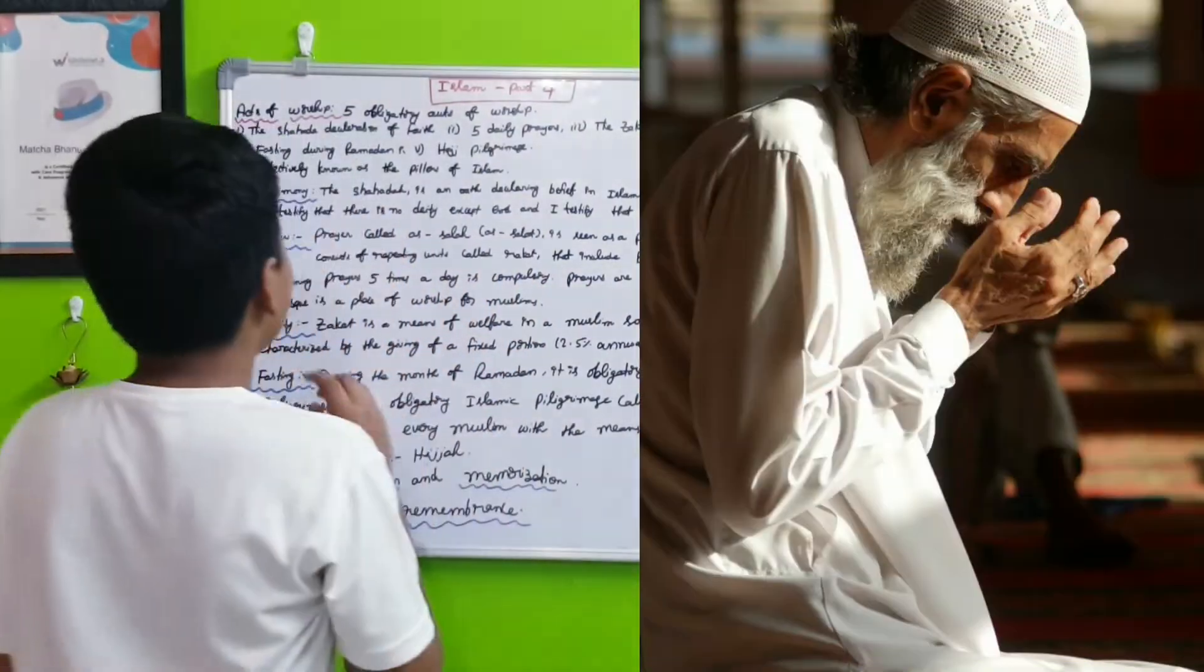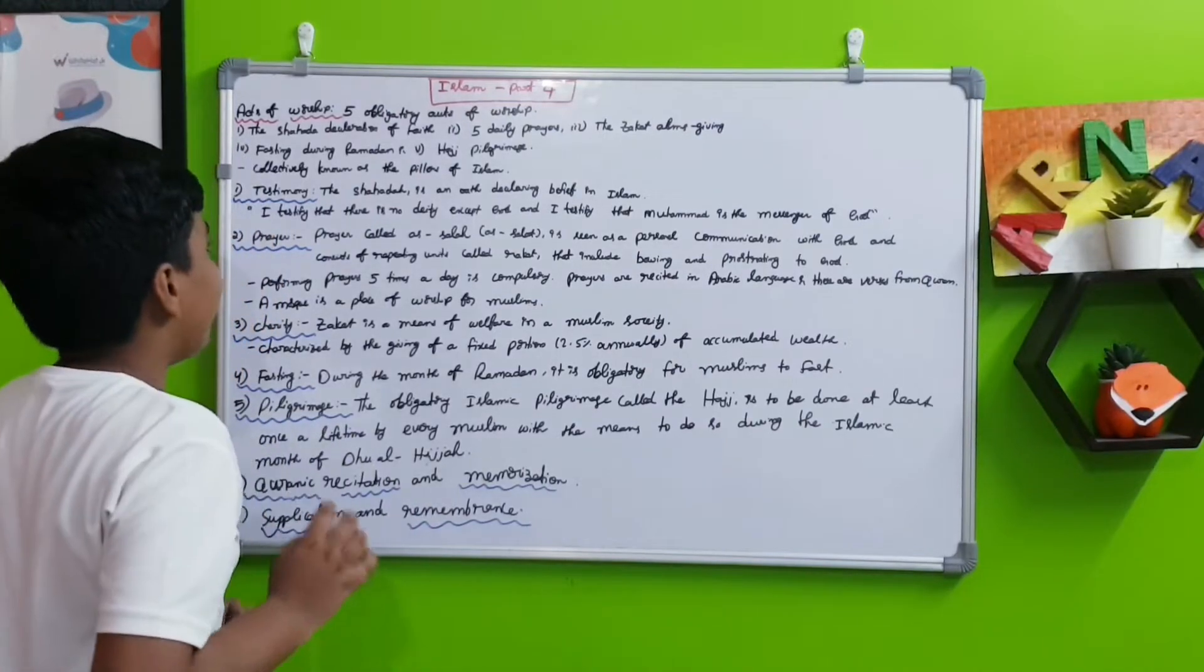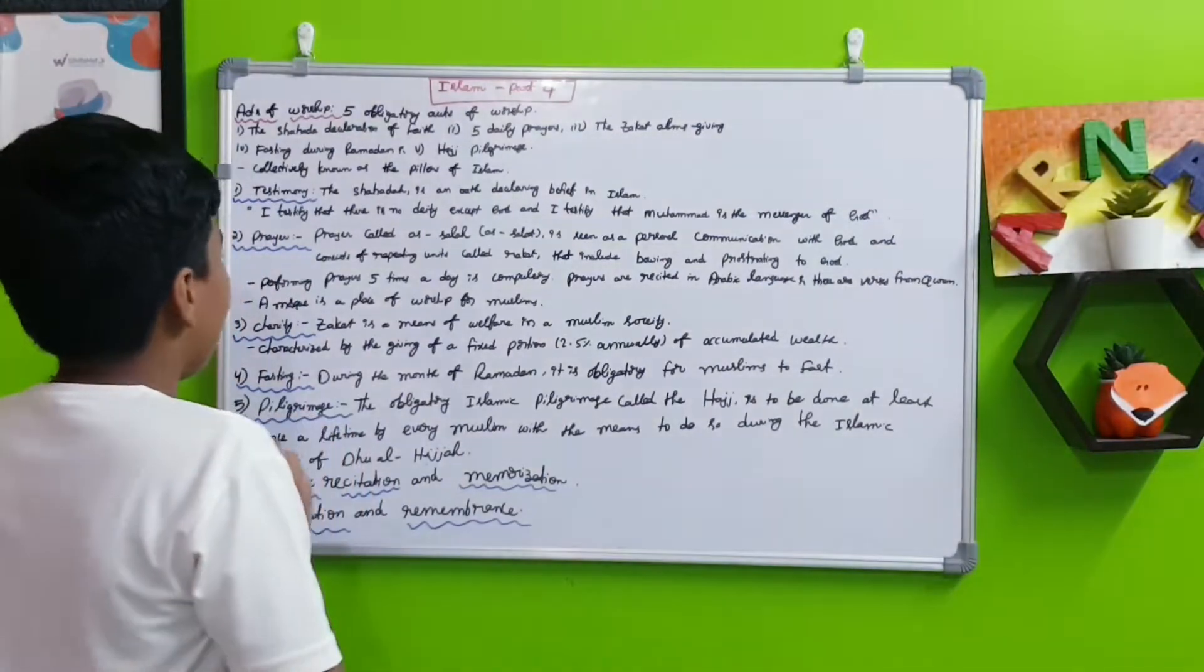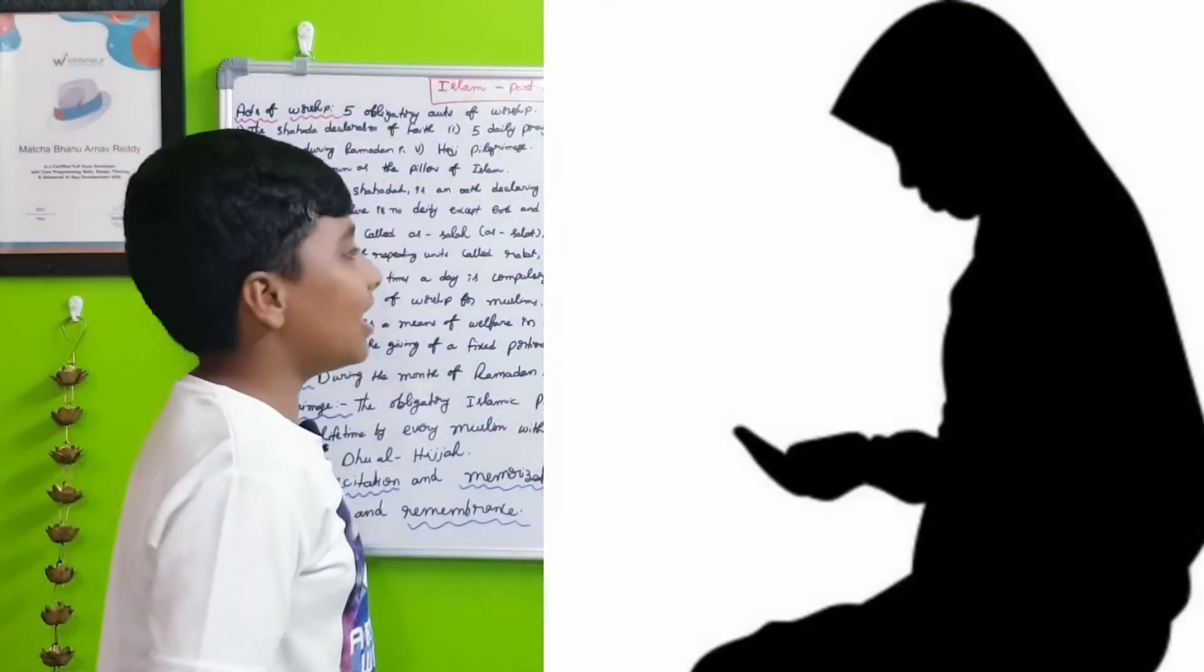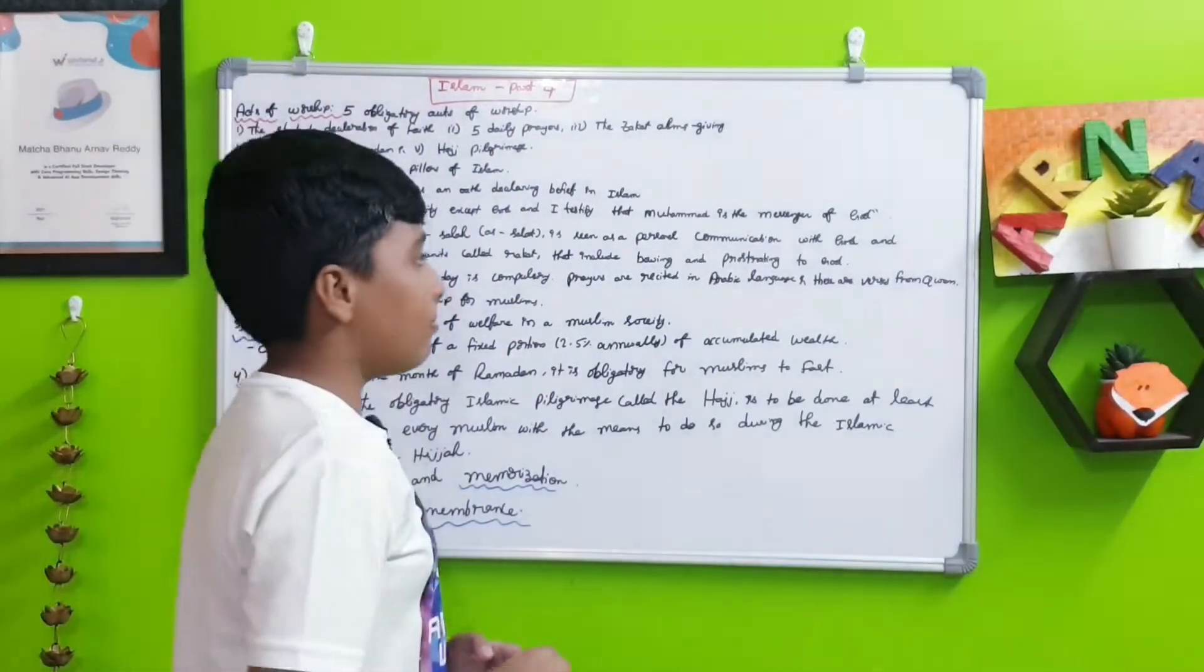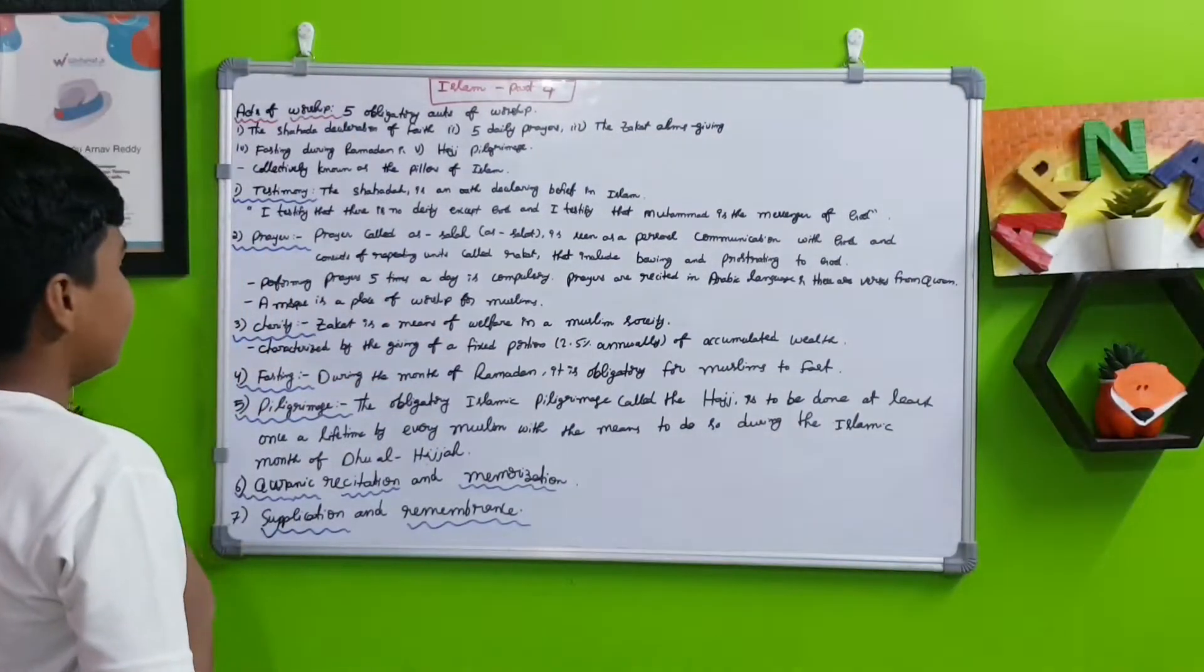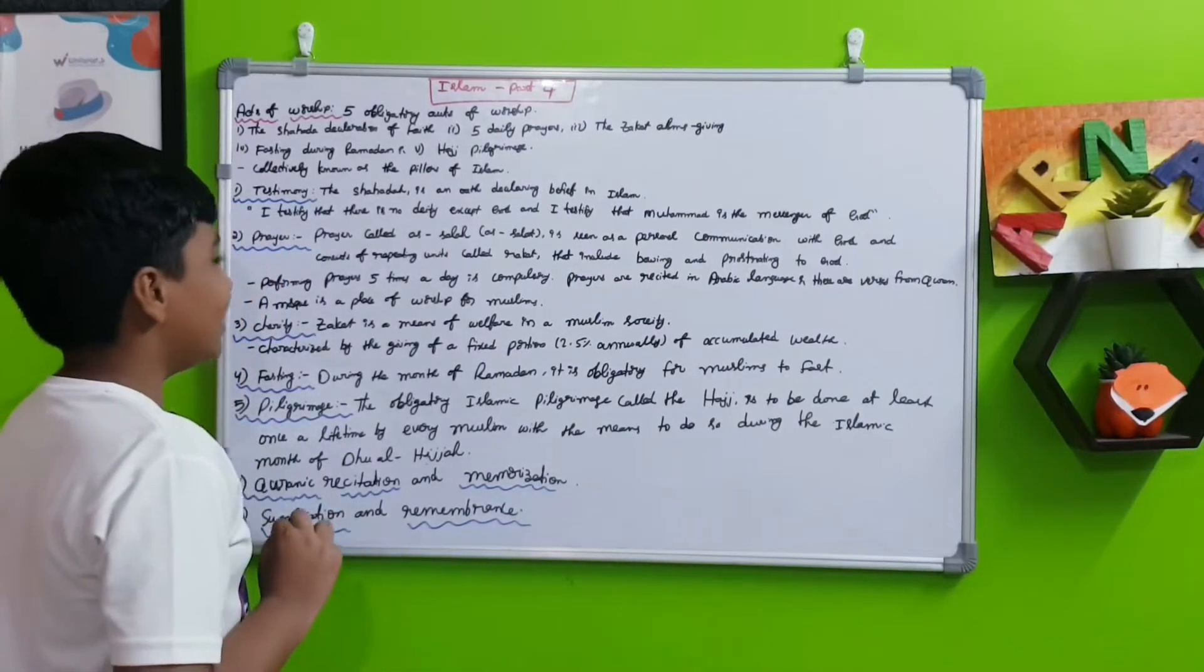Next is the prayers, or Salah. Prayer is seen as a personal communication with God and consists of repeating units called rakats that include bowing and prostrating to God. Muslims must perform five prayers every day; that is compulsory.